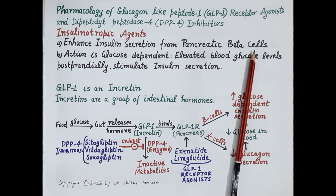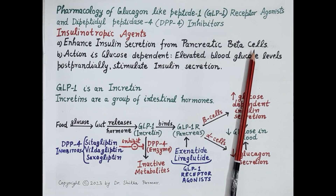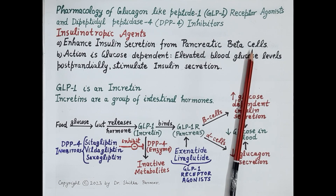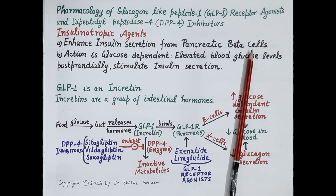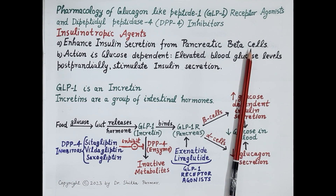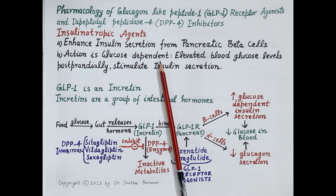Increased secretion of insulin improves transportation of glucose from the blood to the body cells. As the glucose moves into the body cells, concentration of the glucose reduces in the blood and this controls type 2 diabetes mellitus. Now very important: unlike sulfonylureas and meglitinide analogues, action of these drugs is glucose dependent.